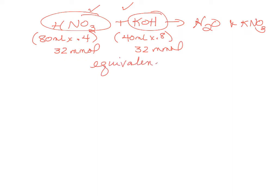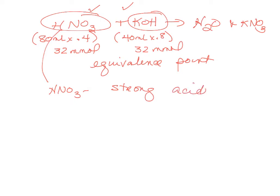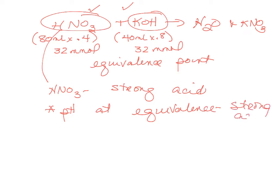It's really important to know how to handle the equivalence point regardless of what type of acid you're titrating. This is an easy problem because nitric acid is a strong acid. The pH at the equivalence point for a strong acid is always 7.